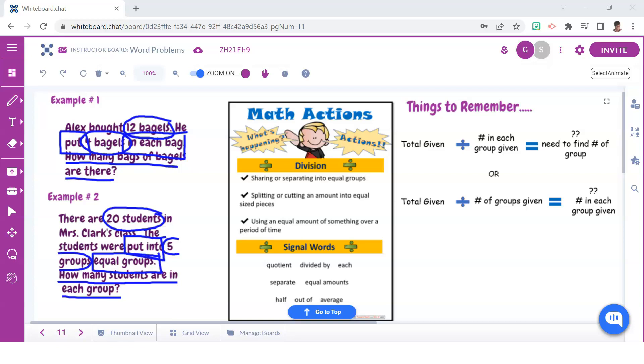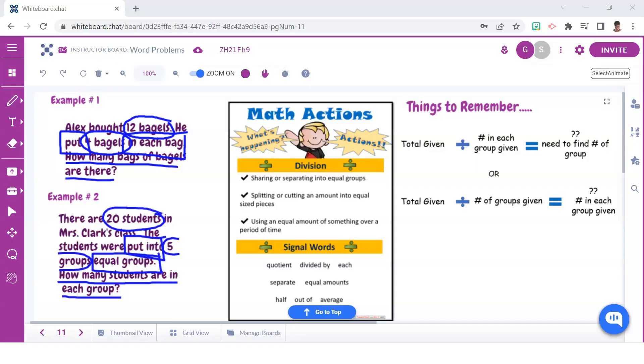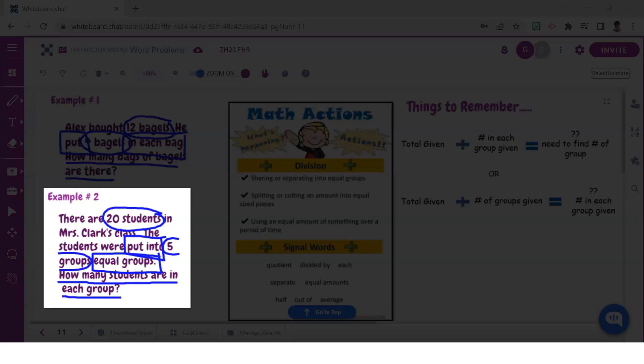Another point to keep in mind when it comes to division word problems is that equal groups are involved. Either the number in each group is given, as we see in the first example, and we need to find the number of groups, or the number of groups is given and we need to find the number in each group, as we see in the second example.